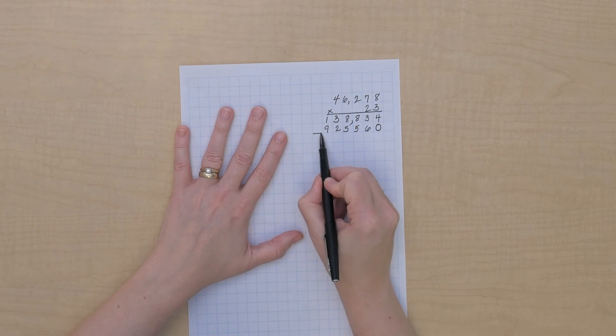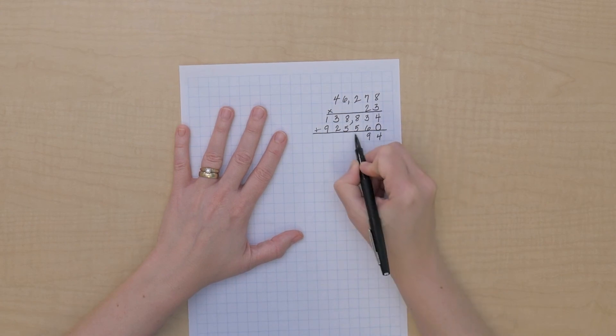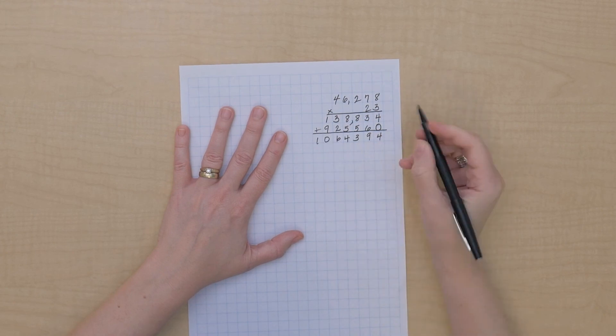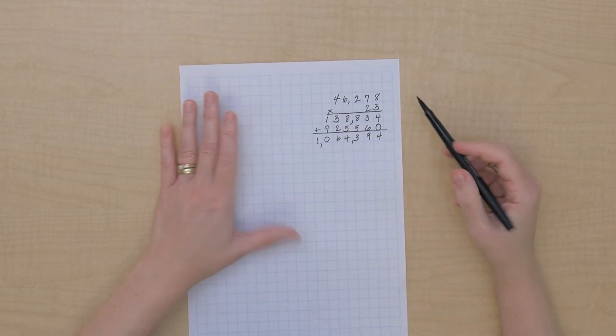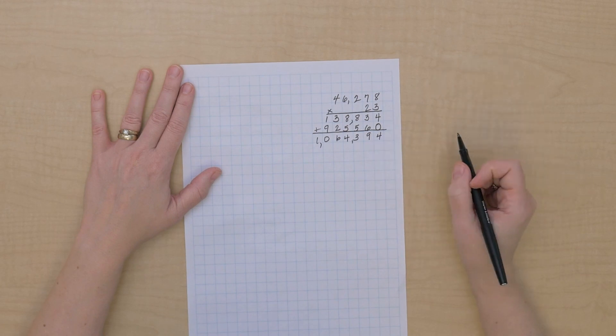So now we have our 2 partial products and we know just like on the flat bead frame, we would do that addition. So 46,278 times 23 equals 1,064,394.